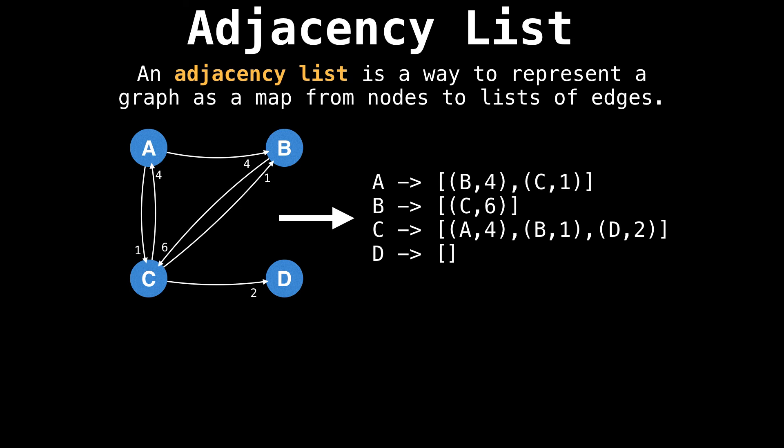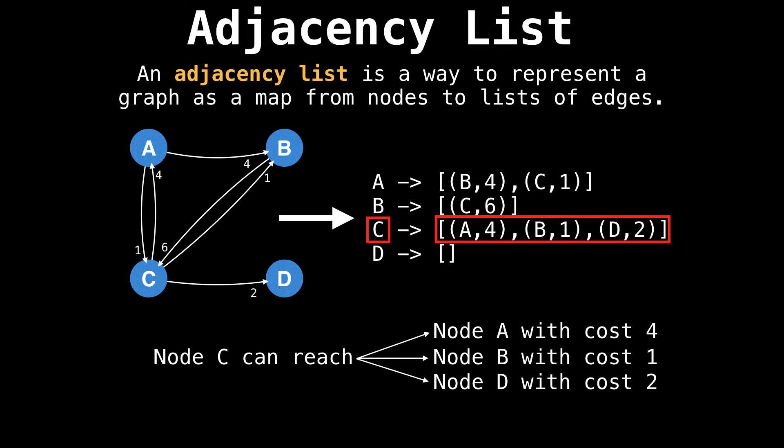The main alternative to the adjacency matrix is the adjacency list, which is a way to represent a graph as a map of nodes to list of edges. The idea is that each node tracks all of its outgoing edges. For example, node C has three outgoing edges. So the map entry for C will track the edge from C to A with cost 4, the edge from C to B with cost 1, and the edge from C to D with cost 2. Notice that in the list of edges, we only need to track two things: the node we're going to and the cost to get there. We don't need to keep track of where we came from because that's already implicitly known.